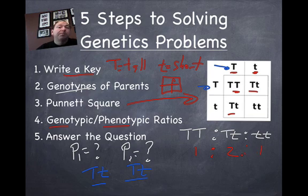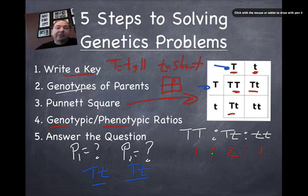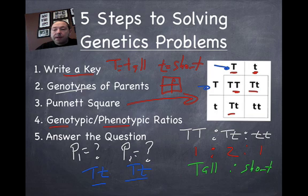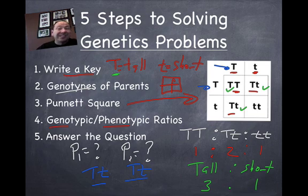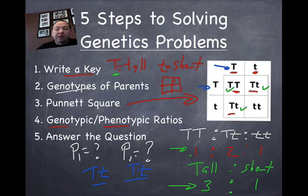Now, the difference between genotypic and phenotypic — if you remember — is that phenotypes are the physical appearance of something. So we're not going to write the letter combination; we're going to look at the difference between tall and short. We count up the number of tall plants. To get a tall plant, all we need is just one dominant trait. So we have three tall plants to one short plant. The phenotypic ratio is three to one, whereas the genotypic ratio is one to two to one.